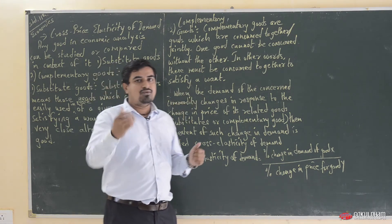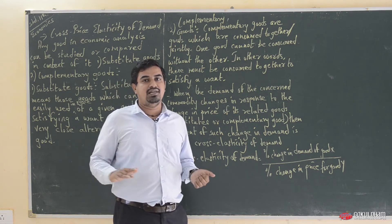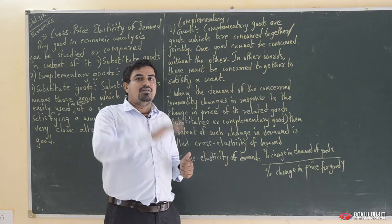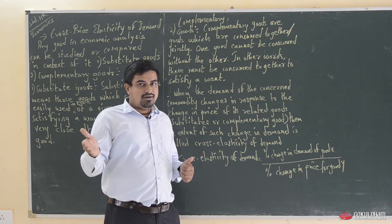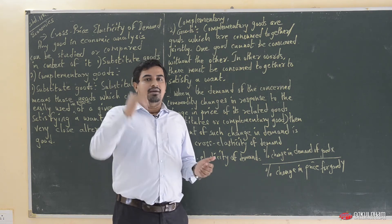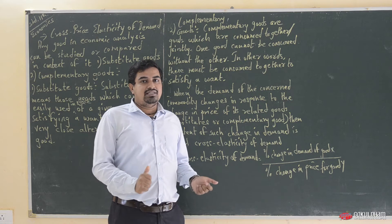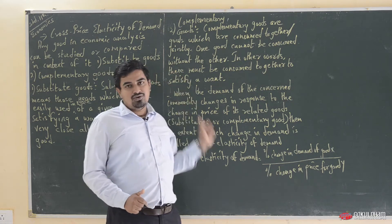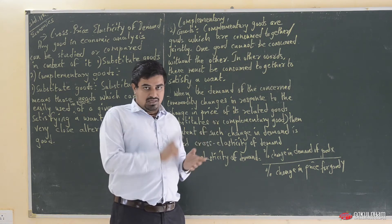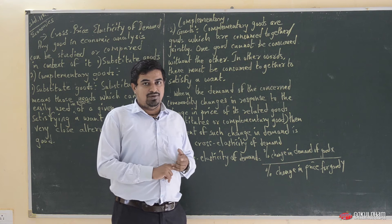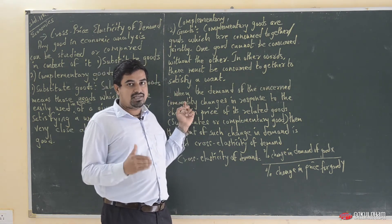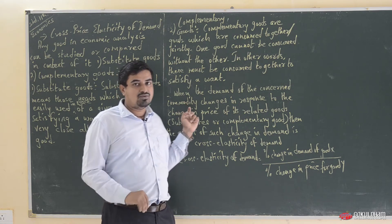Now we are going to learn about the cross price elasticity of demand, because it takes into consideration the price of related goods. Since cross price elasticity of demand considers the price of related goods, we considered both these concepts — the concepts related to substitute goods and complementary goods.